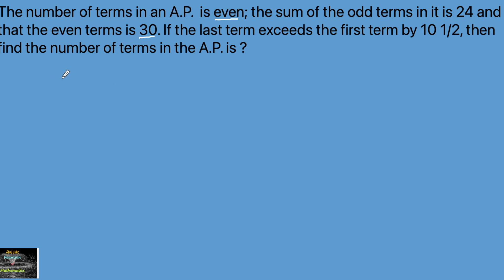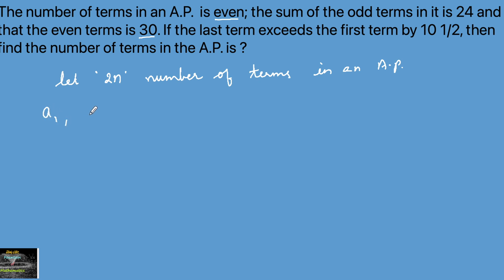Since there are an even number of terms, let there be 2n terms in the AP: a1, a2, a3, and so on to a2n. From these terms we can identify the odd-indexed terms and even-indexed terms.